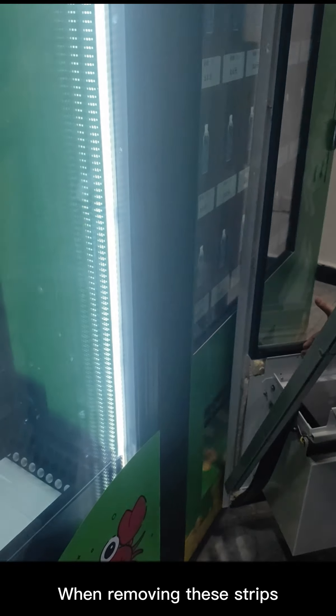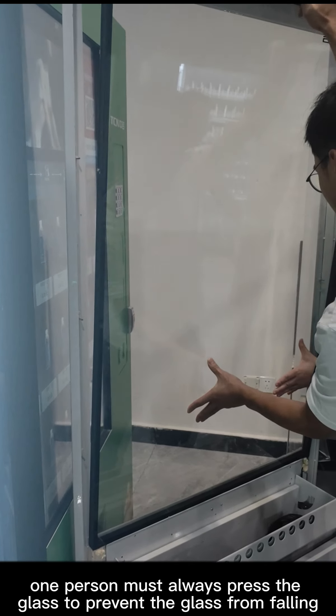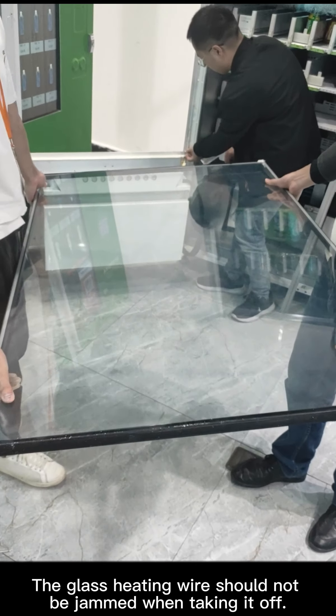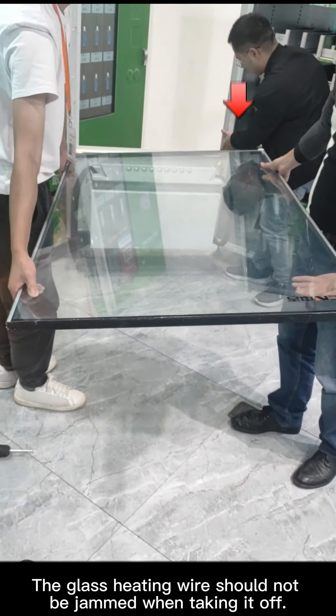When removing these strips, one person must always press the glass to prevent the glass from falling. Then we take off the glass door. The glass heating wire should not be jammed when taking it off.